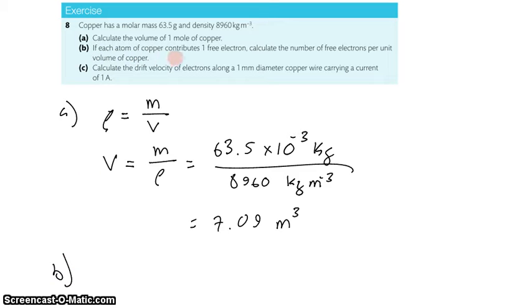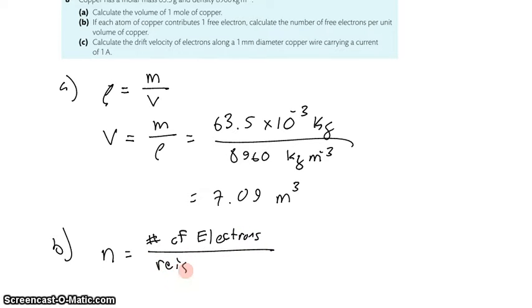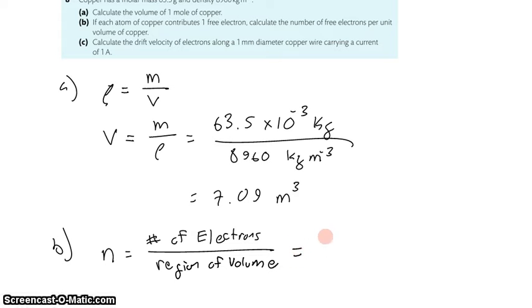Part B: if each atom of copper contains one free electron, calculate the number of free electrons per unit volume of copper. This is that symbol N. N is the electron density — the number of free electrons per region of volume. If I have one mole of copper, I know it will take up this volume. And if I have one mole of copper, then I know that I have 6.02 times 10 to the 23rd atoms of copper, each of which will have one electron.